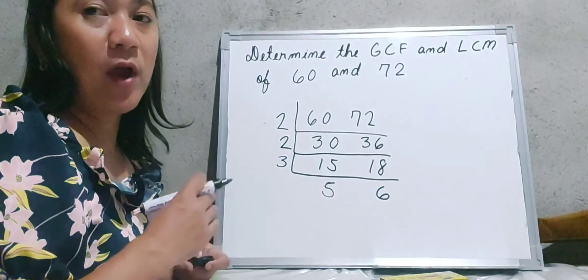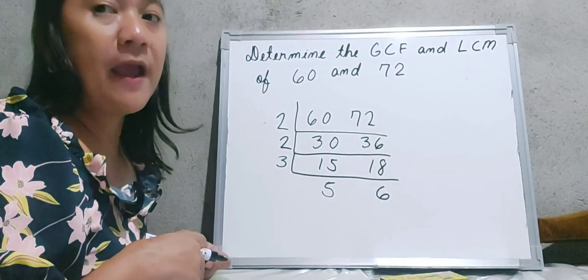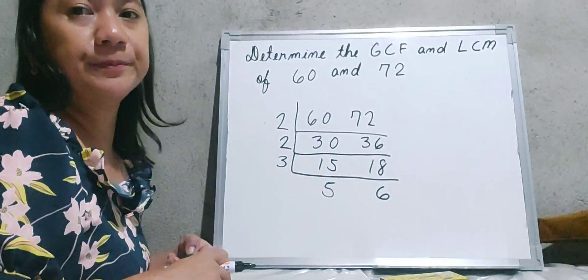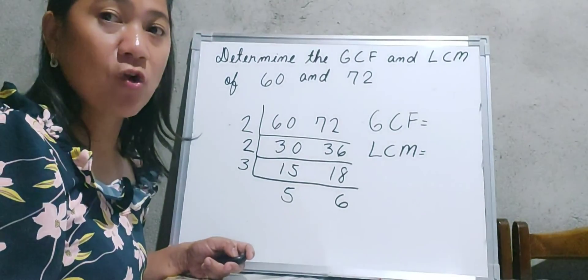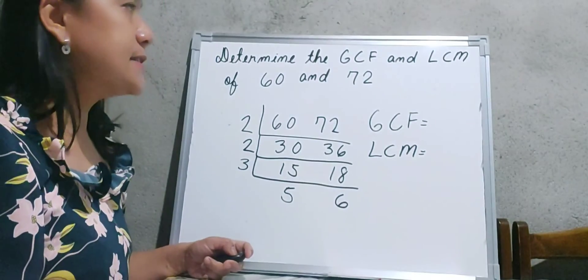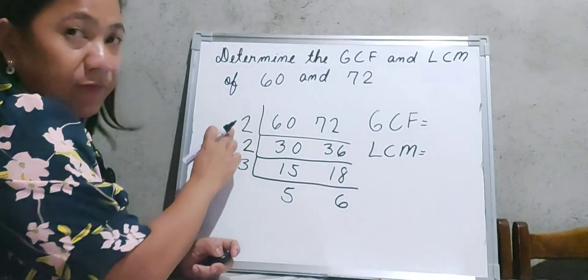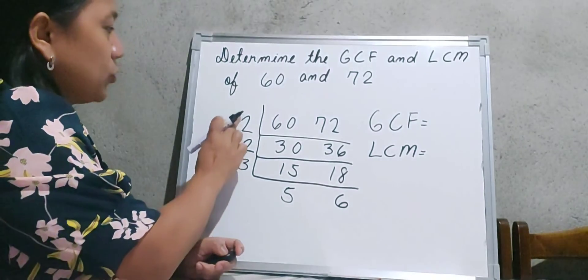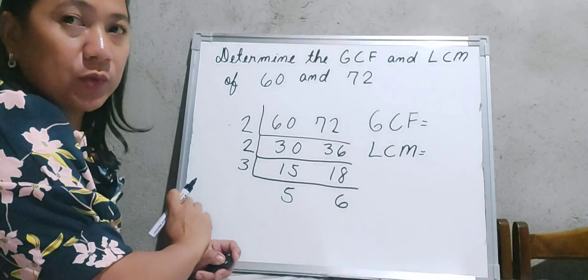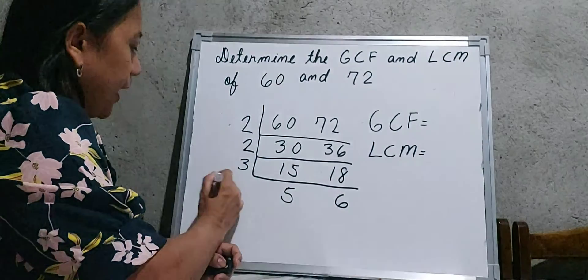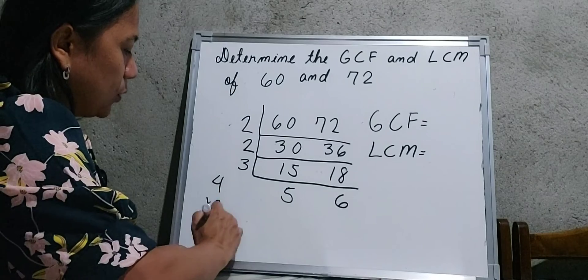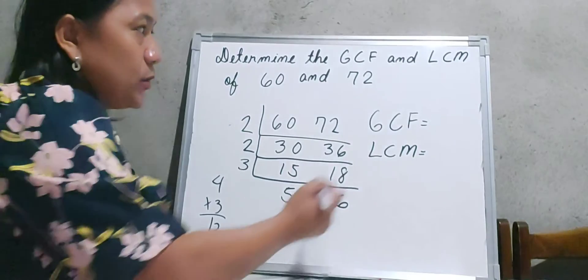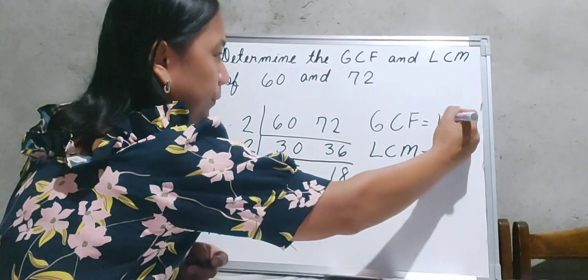We stop the continuous division method here since 5 and 6 share no common prime factor. To find the greatest common factor of 60 and 72, we multiply the numbers on the left side: 2 times 2 is 4, and 4 times 3 is equal to 12. So the GCF of 60 and 72 is 12.